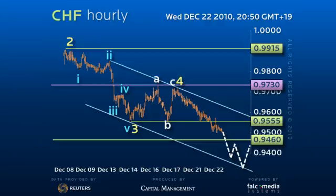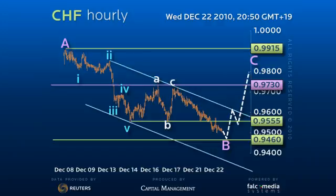A decisive break of the 93.90 level would argue we are only in wave 3 of 3 of a larger decline, with the potential for downside acceleration. Only over the recent 95.80 peak would suggest the 94.60 base has held for more range trade and a recovery back to 97.30. Good luck and have a great day.